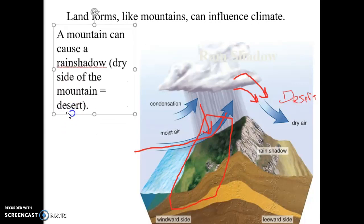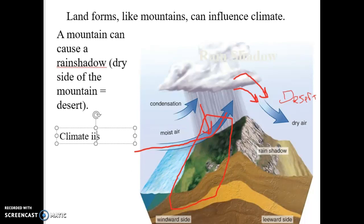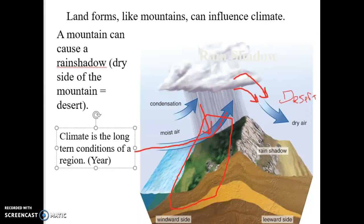Something to stress when we talk about climate and weather: climate is the long-term conditions of a region. Think about how much rainfall do you receive across the year, the average temperature, the average sunlight across the year. That is what we talk about with climate.